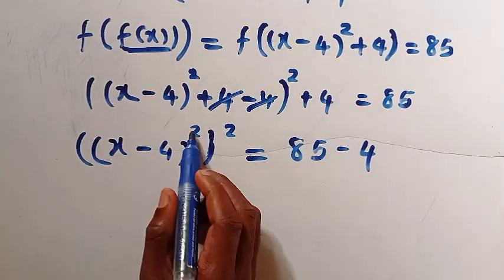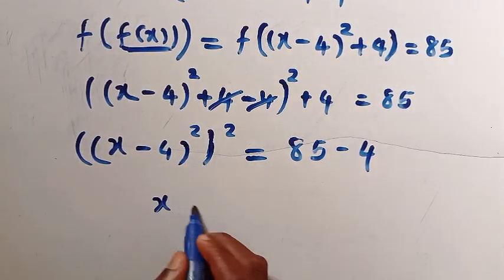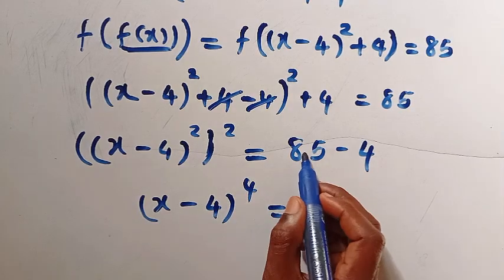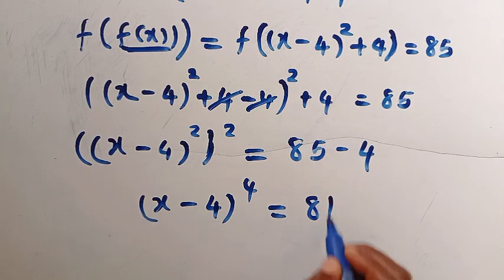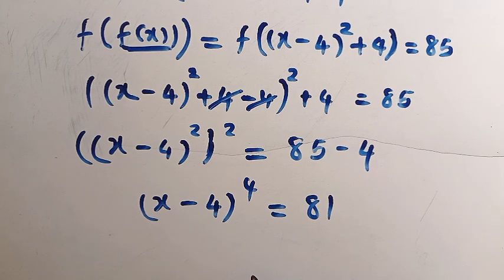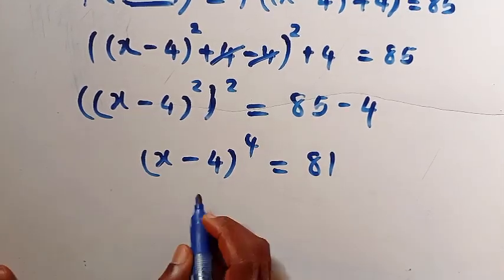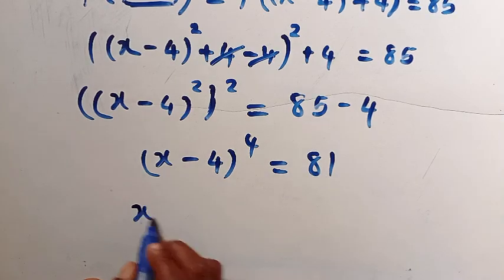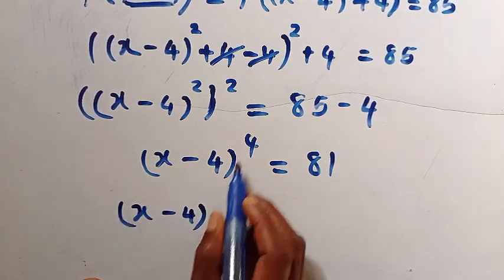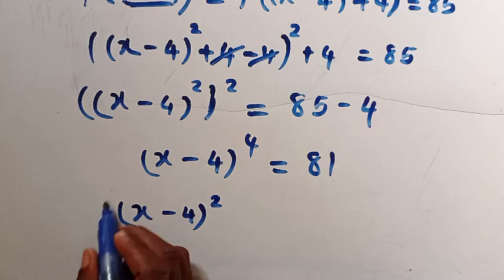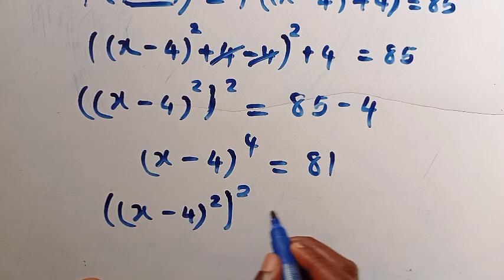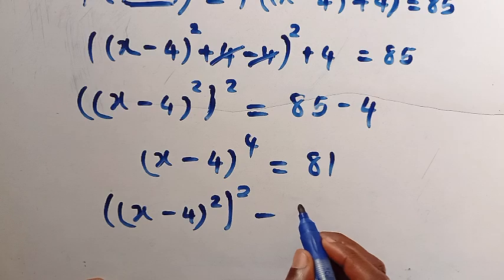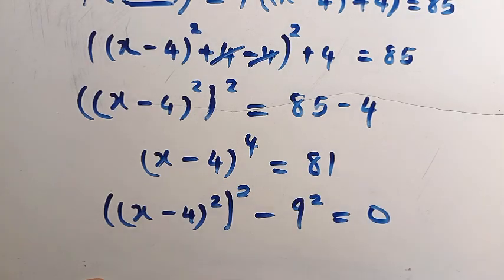From this we have 2 times 2 equals 4, so x minus 4 raised to power 4 equals 85 minus 4, which is 81. We then rewrite x minus 4 raised to power 4 as (x minus 4 squared) raised to power 2, minus 81, which is 9 squared, everything equals 0.